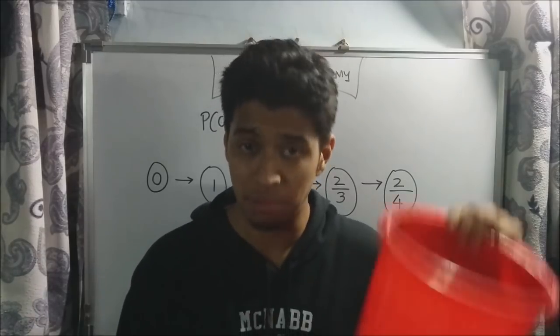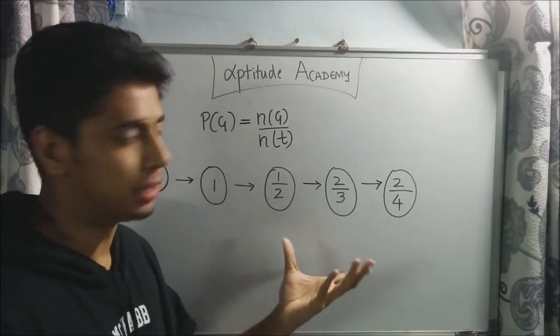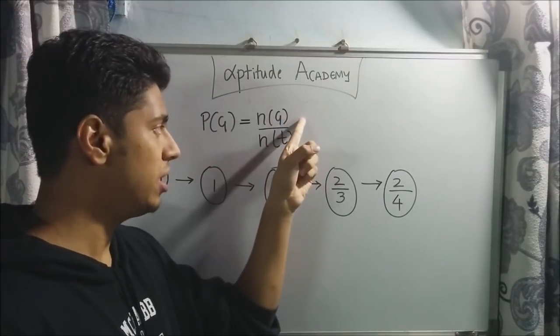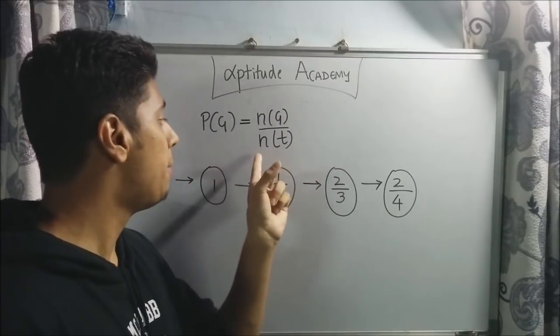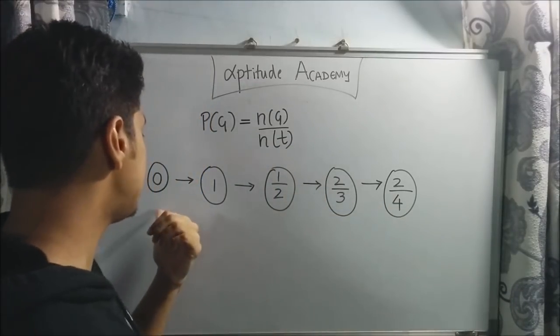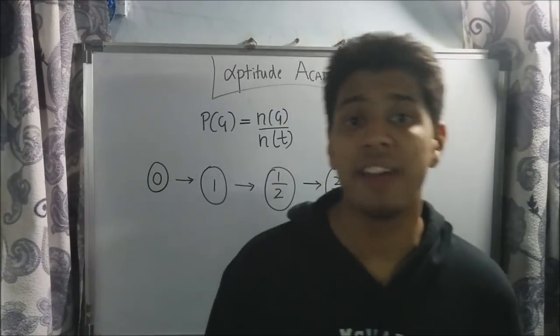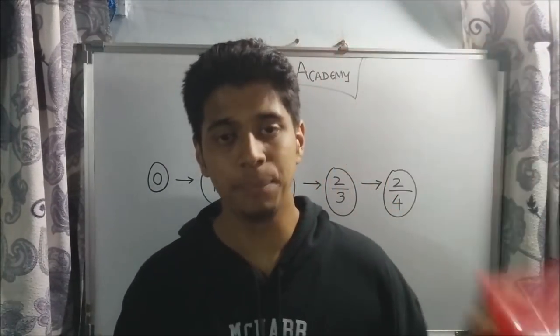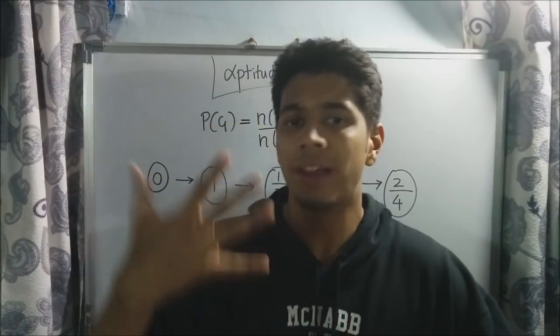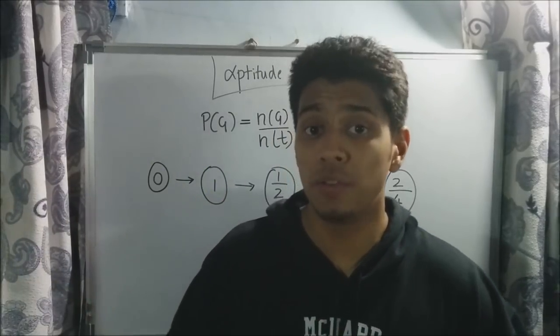To understand probability better, let us take the example of the bucket. Now on the board, I have written a couple of probabilities that could occur. Now the event favorable to us is a green ball. So P(G) will be equal to n(G), number of times a green ball can occur upon n(T), the number of balls that are there in the bucket. Now let us see what is P(G) equal to zero. P(G) equal to zero means the event never occurs. Now if the bucket is empty, I will add yellow balls. Three yellow balls. So whatever ball I pick up, it will never be a green ball. So that is P(G) equal to zero.